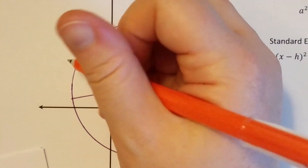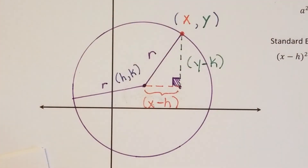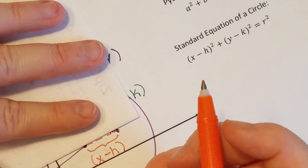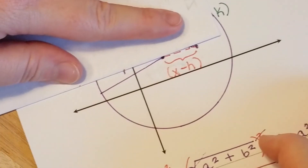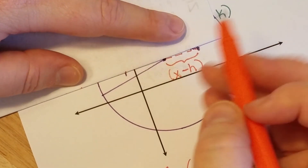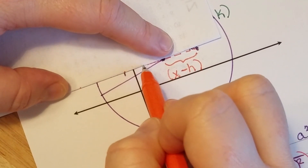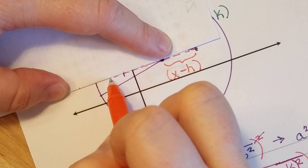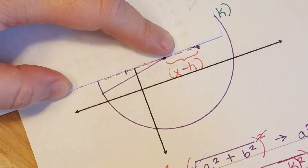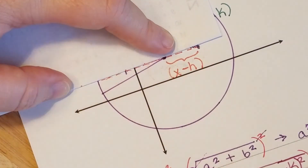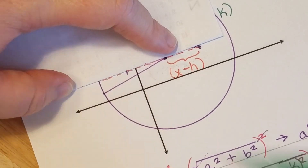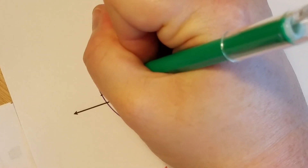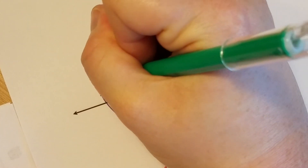Now if I were to construct my right triangle — making sure I'm doing this on camera — there's my horizontal distance, and my vertical distance would be right here.